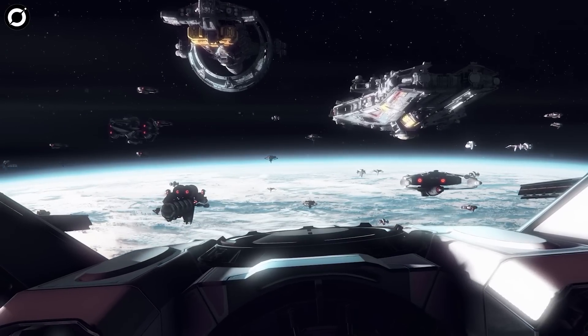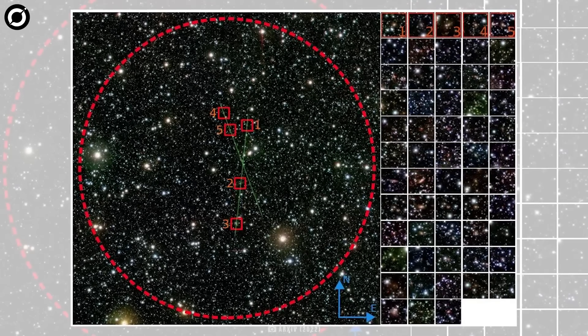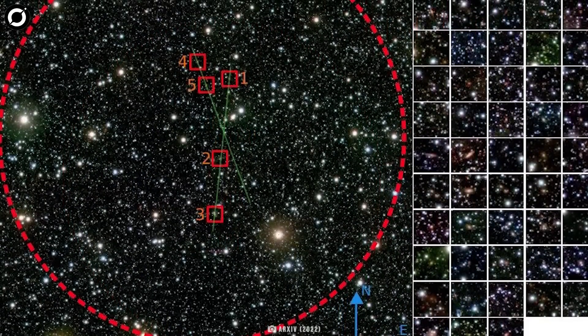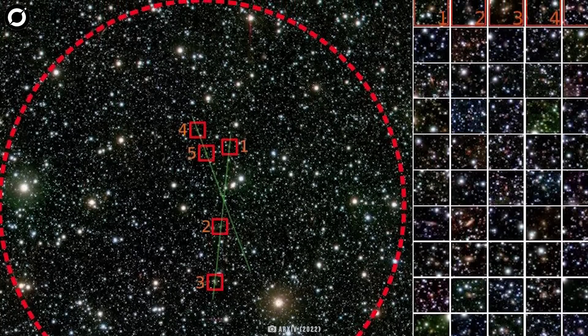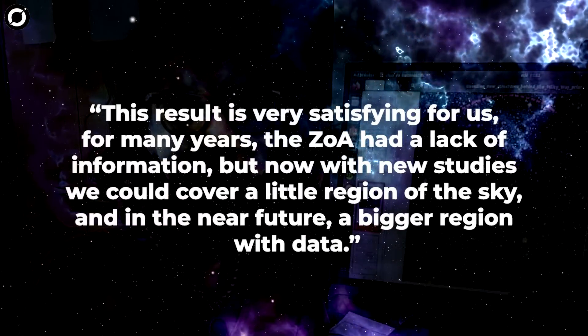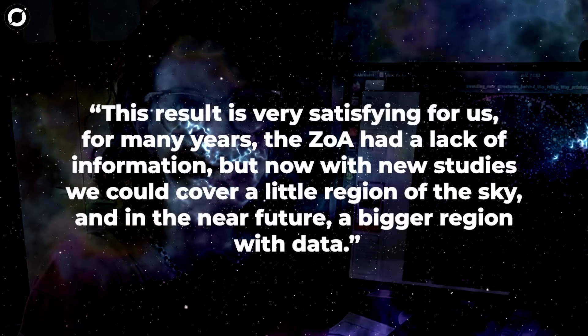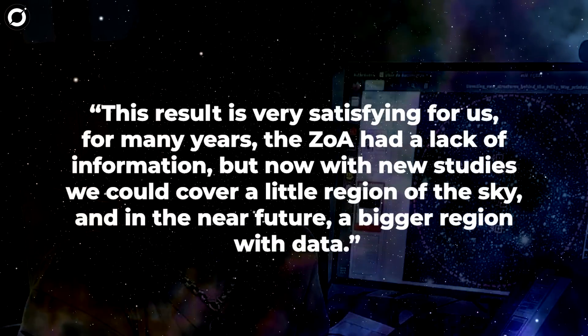This new galaxy cluster, named VVV-CL-J181435-381432, is located behind the Milky Way bulge and helps to complete the picture of the large-scale structure in this still little explored area of the sky. Daniela Galdino, an astronomer at the National University of San Juan in Argentina who reported the discovery, says this result is very satisfying. For many years the zone of avoidance had a lack of information, but now with new studies we could cover a little region of the sky, and in the near future a bigger region with data.